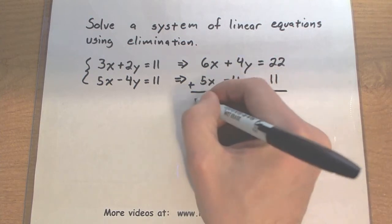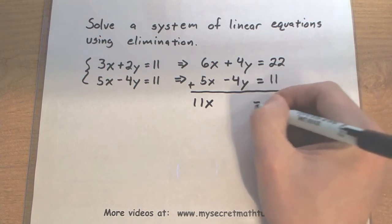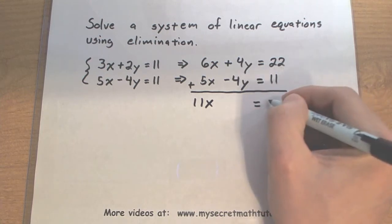So 6 and 5, 11x. Plus 4 minus 4, the y's are gone. 22 and 11, 33.